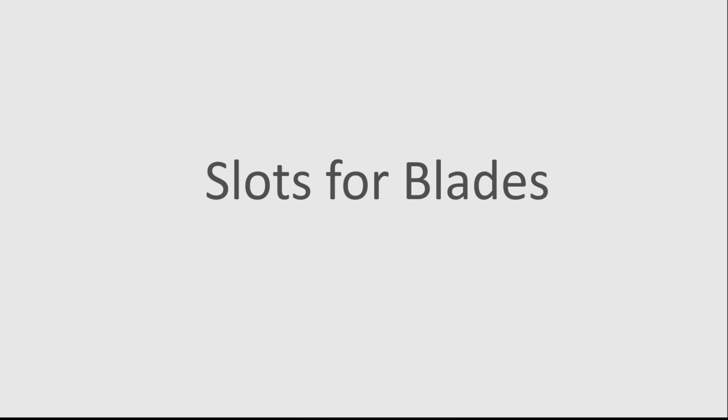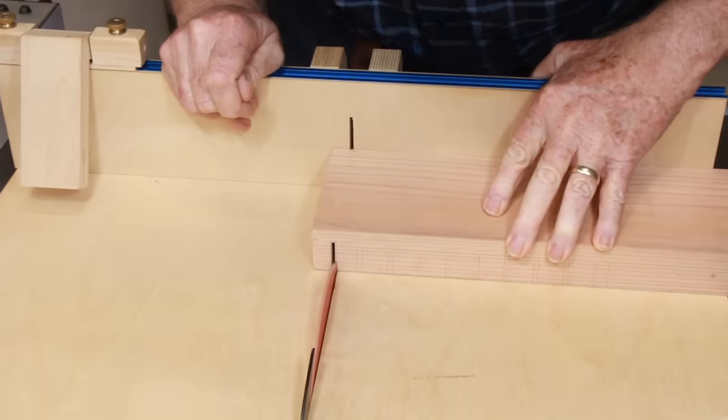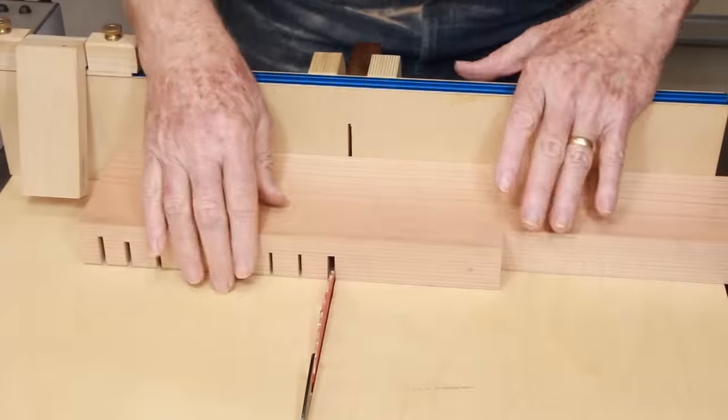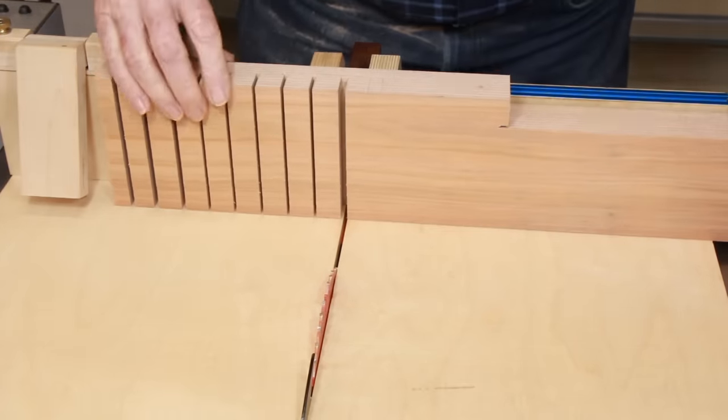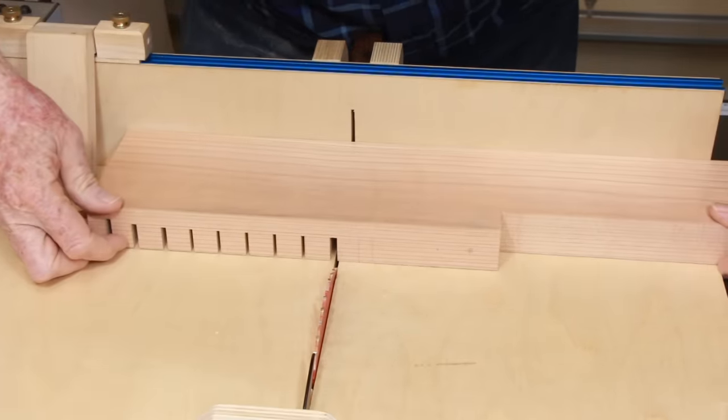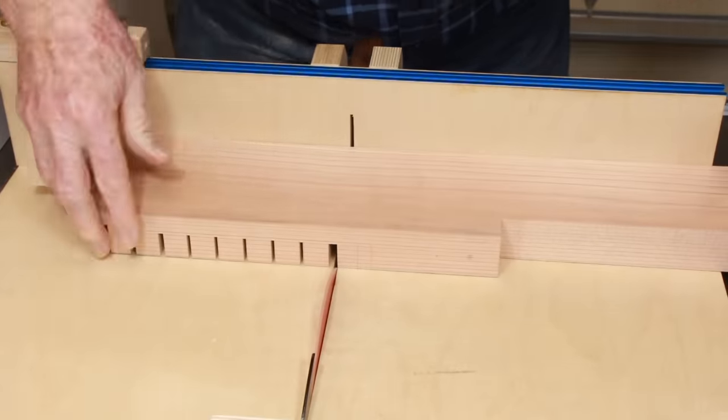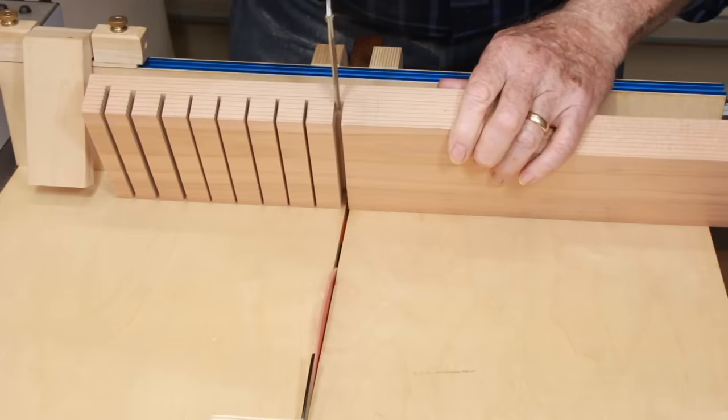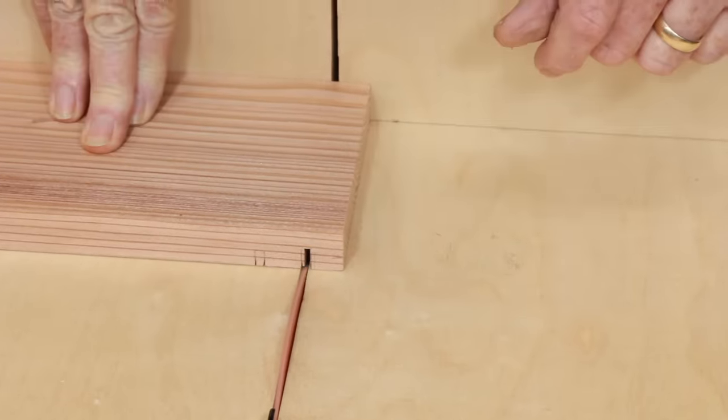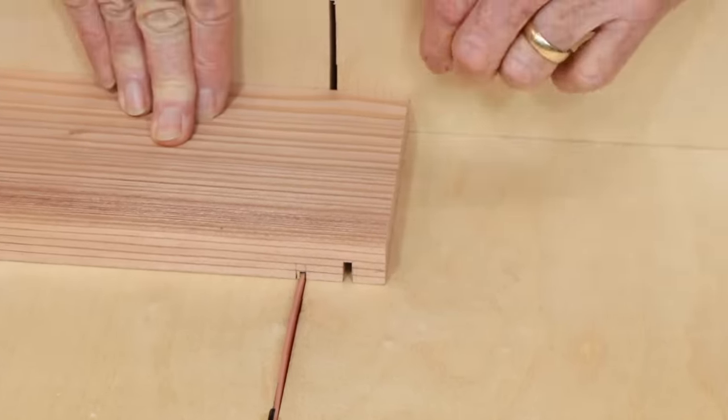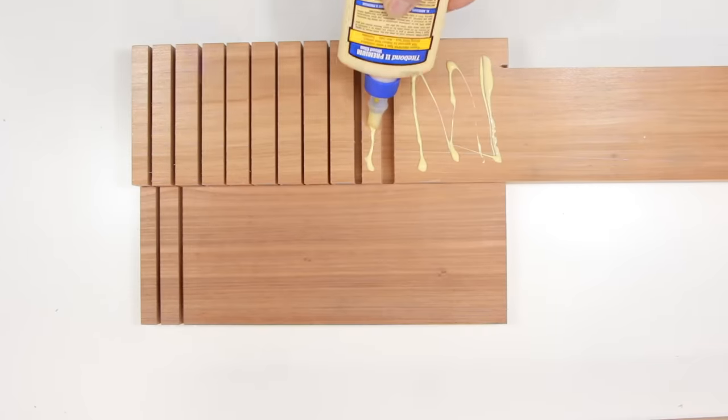Next, I cut slots which house a number of bladed tools. I carefully adjusted the blade height of my saw so each tool would have about the right amount of space. I want to test the fit of things like these scissors right now while it's easy to make adjustments.